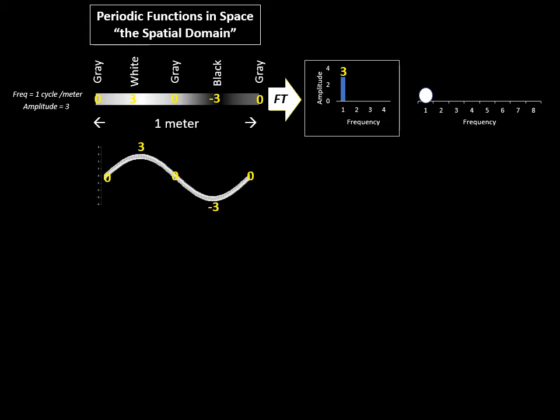Into a dot if we wish to so display the information as a single dot on the frequency axis at the position of one cycle per meter. And the brightness of the dot would have an amplitude of three.